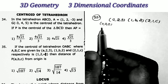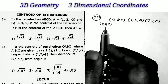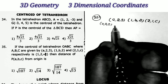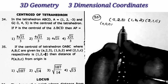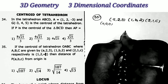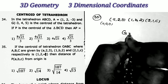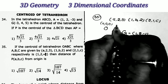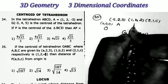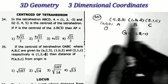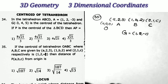Next question, sum number 35. If the centroid of tetrahedron OABC, where O = (0,0,0), A = (a, 2, 3), B = (1, b, 2), C = (2, 1, c), is given as G = (1, 2, -1), then find the distance of point P = (a, b, c) from the origin.